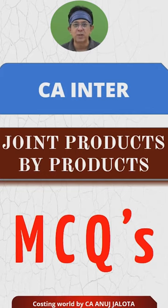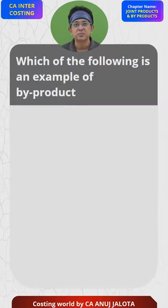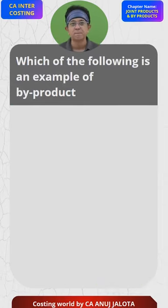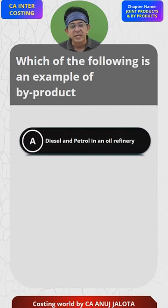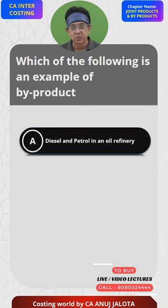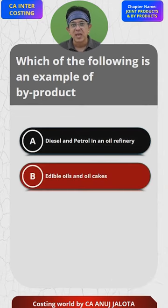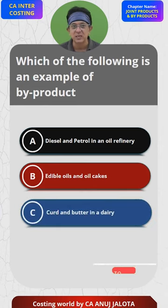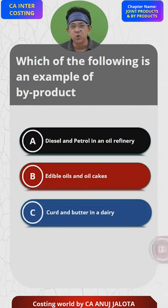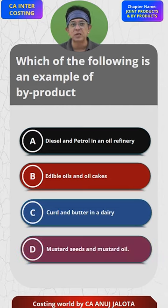Joint products and byproducts MCQs. Which of the following is an example of a by-product? A: diesel and petrol in an oil refinery. B: edible oils and oil cakes. C: curd and butter in a dairy. D: mustard oil and mustard seeds.